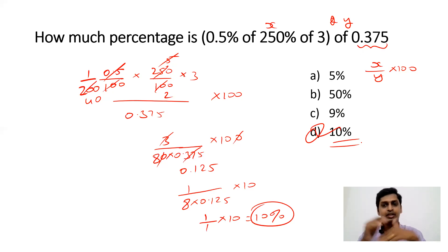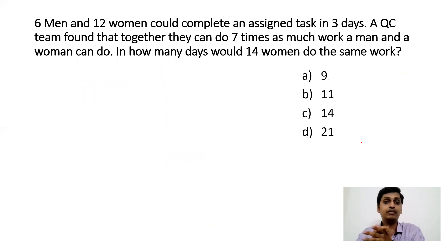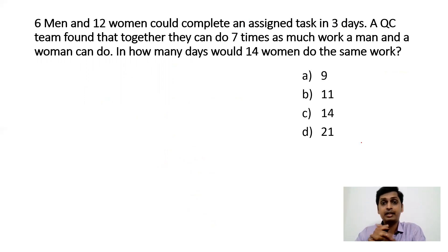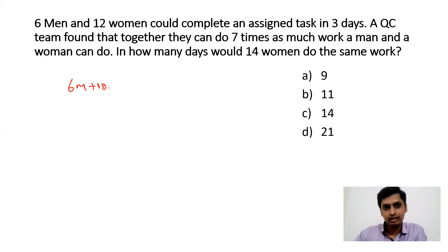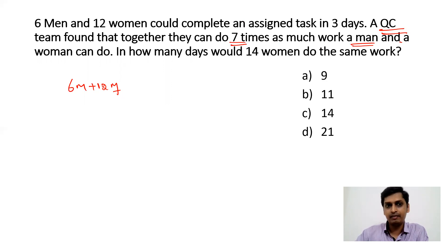Hope you understood — it's a very simple question. Now the next question: 6 men and 12 women could complete an assigned task in 3 days. A QC team found that together they can do 7 times as much work as a man and a woman can do. In how many days would 14 men do the same work?